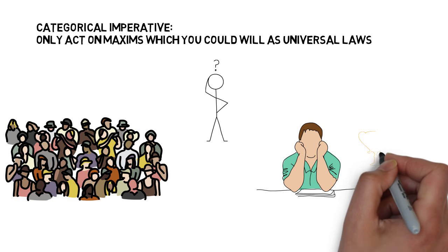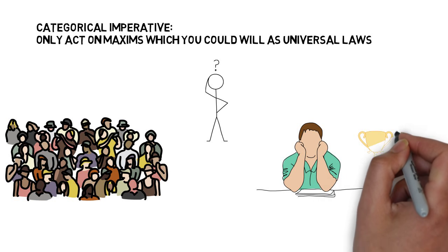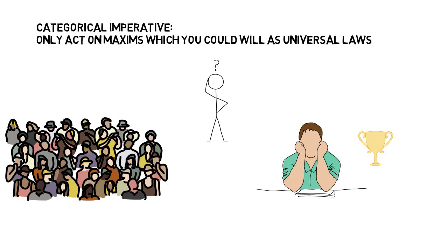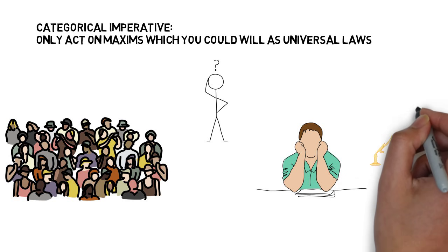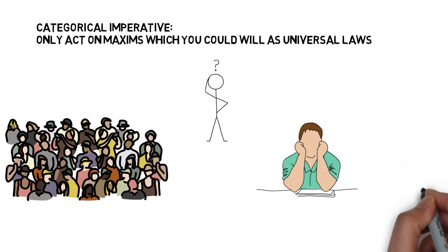For example, grades would not be able to be trusted and academic honors would be meaningless. Since universalizing the maxim or principle that one should cheat when one is unprepared leads to difficulties, we can know that acting on this principle violates the moral duty and the moral law.